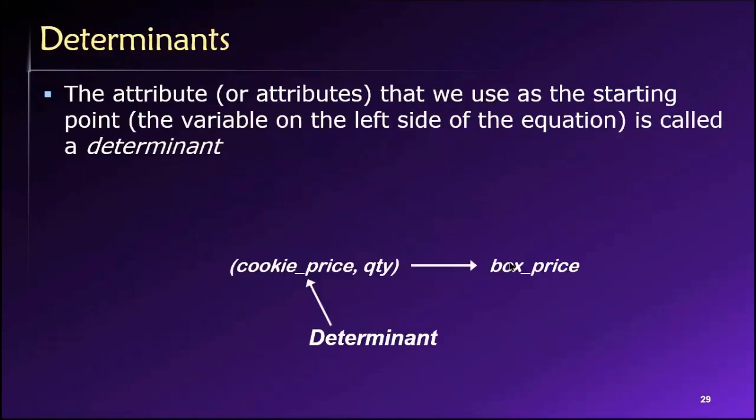So what we do then is we call the attribute or attributes, in this case, on the left side of the equation, determinants. Because their values can be used to determine the value of another attribute in the same table. In this case, the box price. So if I know the cookie price and the quantity, I can use those values to determine the box price. Thus, cookie price and quantity are determinants.